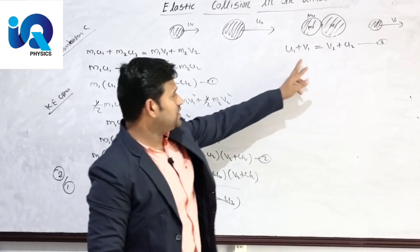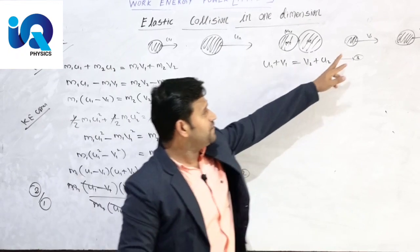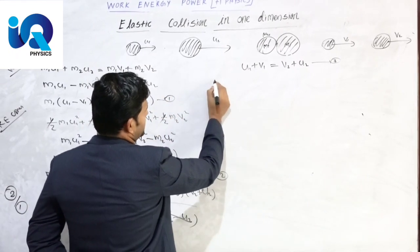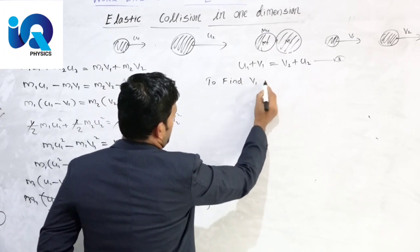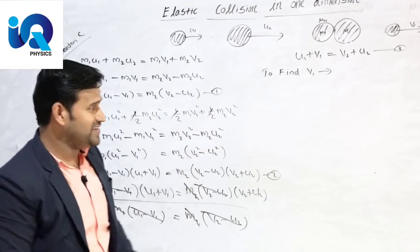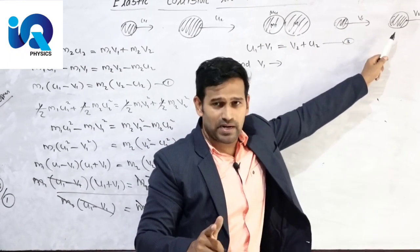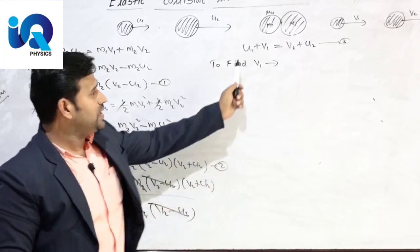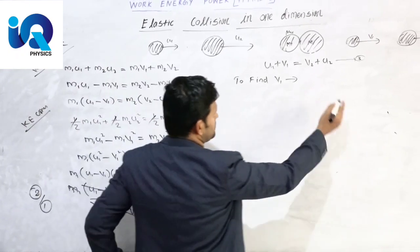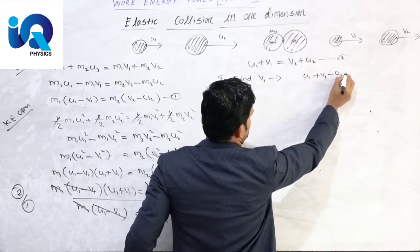The result is: U1 plus V1 equal to V2 plus U2. Now, how do we find V1 and V2? After collision, to find V2, rearrange this equation: V2 equal to U1 plus V1 minus U2.